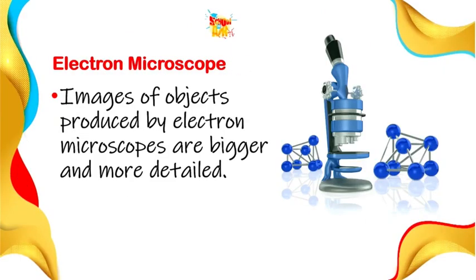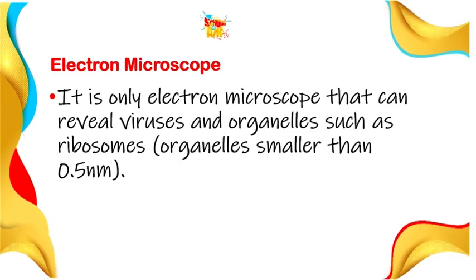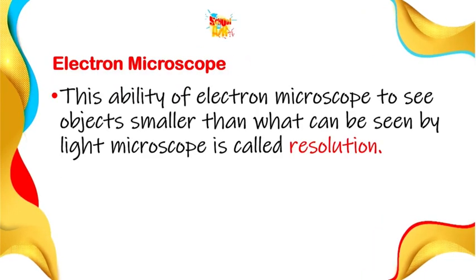Images of objects produced by electron microscopes are bigger and more detailed. What you cannot see in a light microscope you can see in an electron microscope because the electrons gather around the organelles — very tiny organelles like the ribosome — and illuminate them clearly. It is only the electron microscope that can reveal viruses and organelles such as ribosomes smaller than 0.5 nanometers. This ability to see objects smaller than what can be seen by light microscope is called resolution.